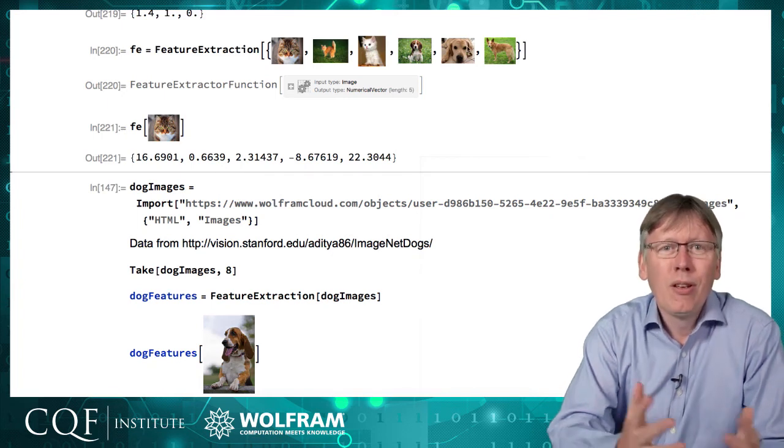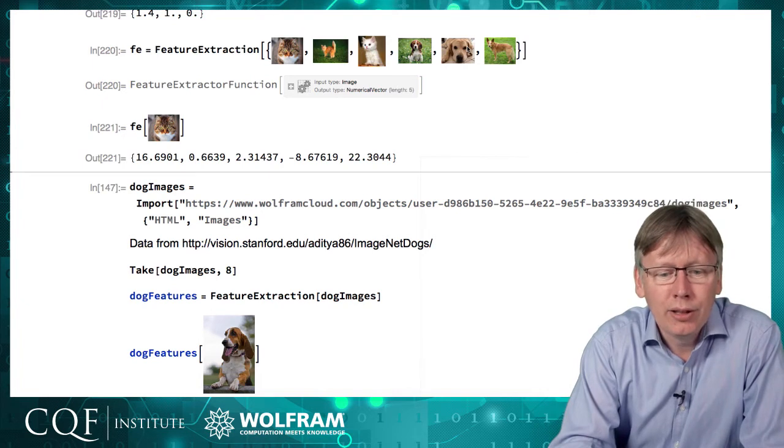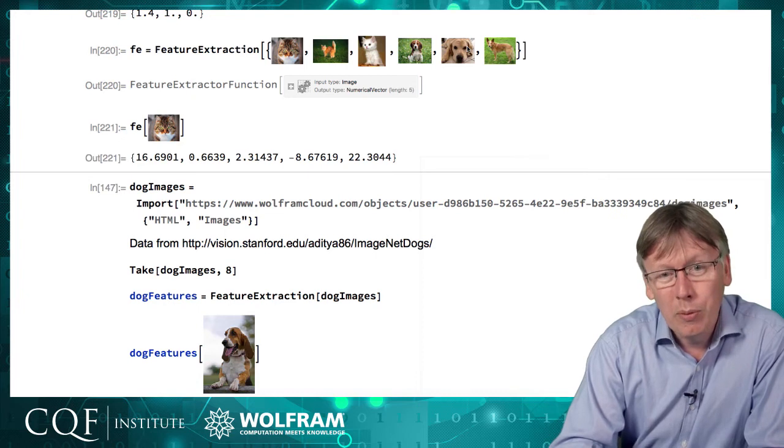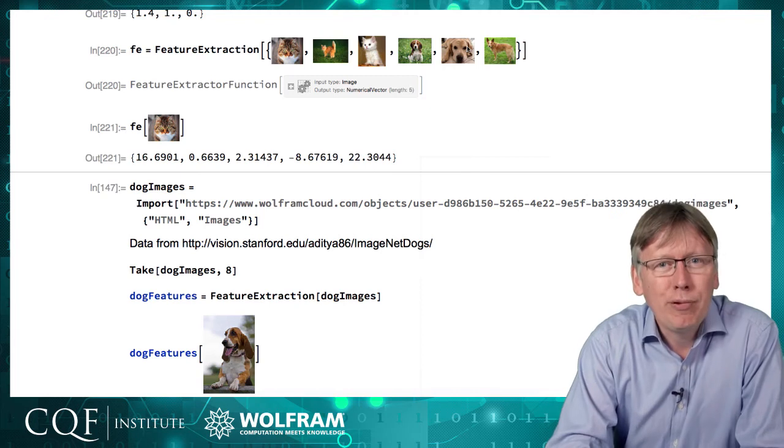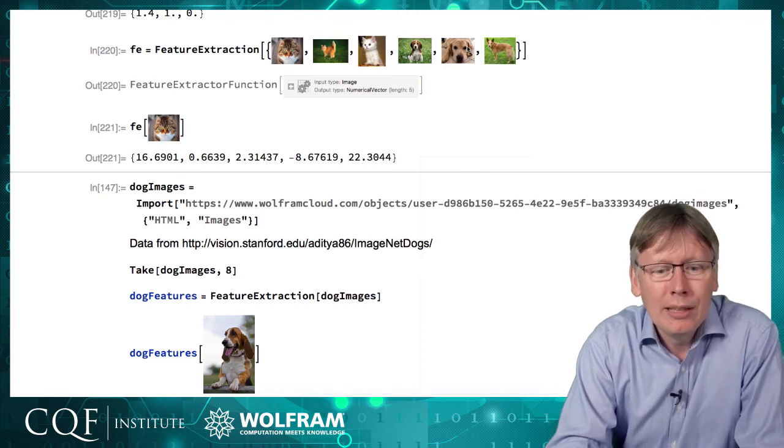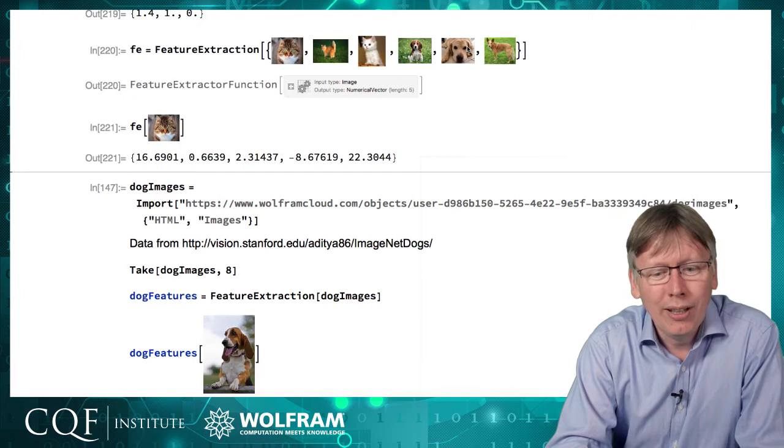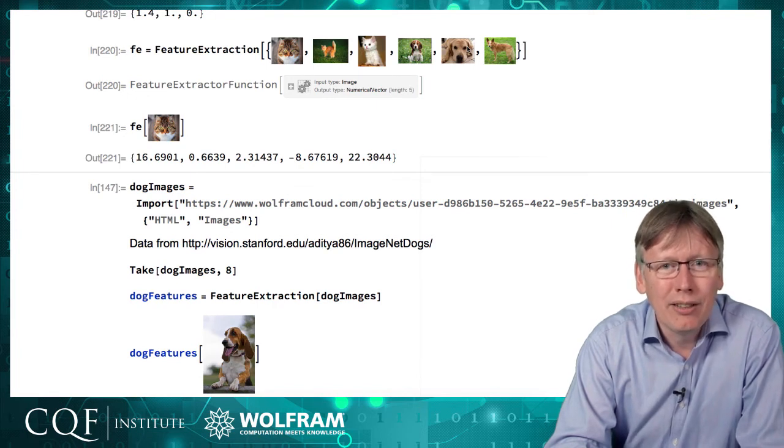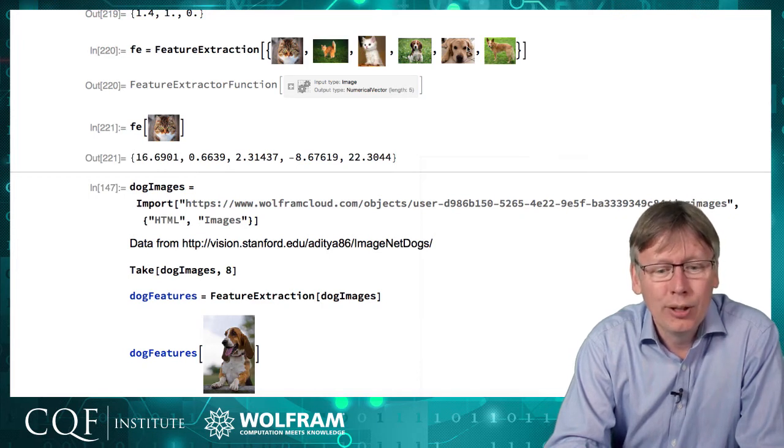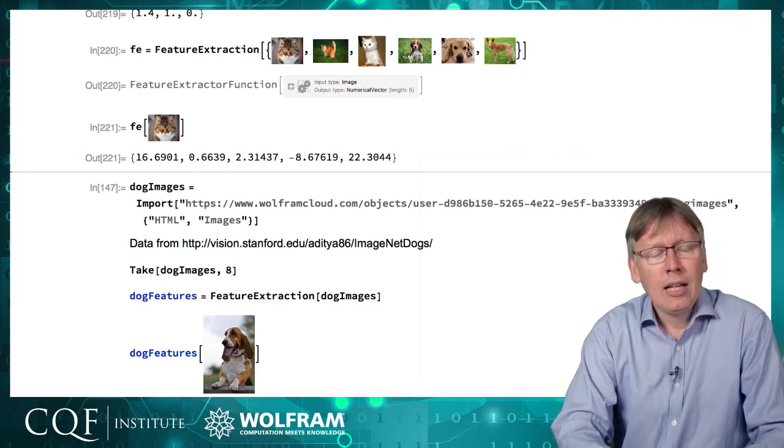When we look at our vector that represents this cat, we've managed to reduce it down to just five numbers that somehow represent this in a fairly distinct way against these other pictures. Those might correspond to something that we could relate to. They might be how pointy its ears are would be one of the numbers, or how round its face is, or how textured the fur is, or something like that. But in practice, they're likely to be things that we can't conceive of, that they're some weird combination of lines or angles or sort of background texturing that you wouldn't particularly recognize if you saw it, and wouldn't help you as a human to distinguish between cats and dogs. But as far as it's concerned, they seem to be predictive.